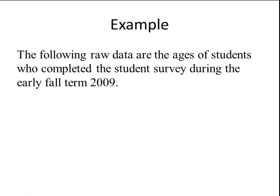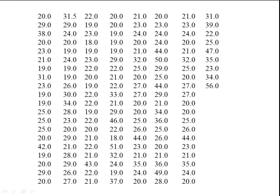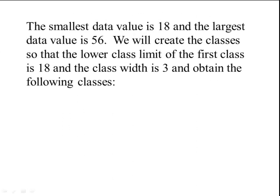Let's look at some raw data involving the student survey for the early fall term 2009. There was a total of 149 students that took the survey, and we're going to look at the ages. So here's the raw data. It's very hard just to look at this data and get anything from it. The smallest value is 18 years of age and the largest is 56. Let's say we want to create the classes so that the lower class limit of the first class is 18 and the class width is 3.